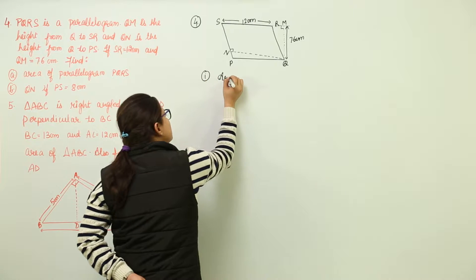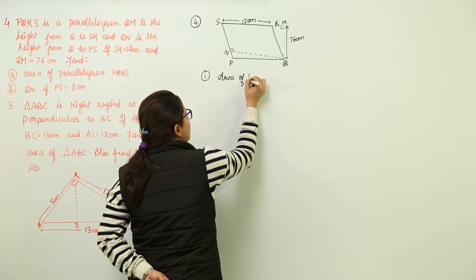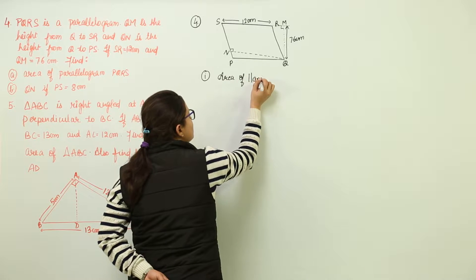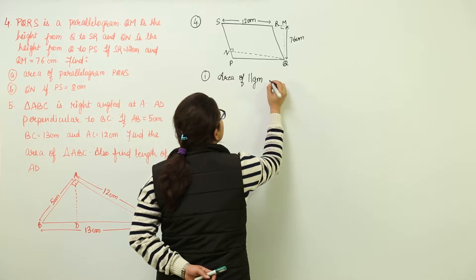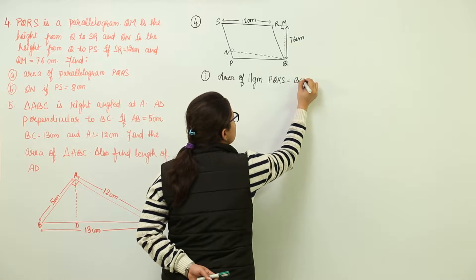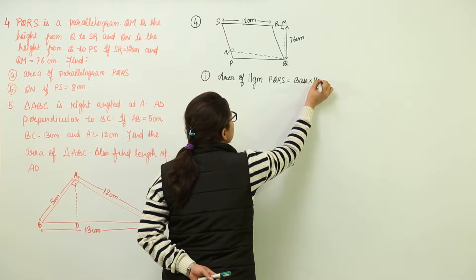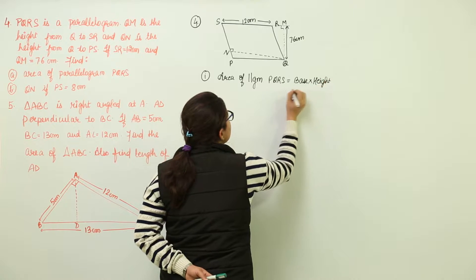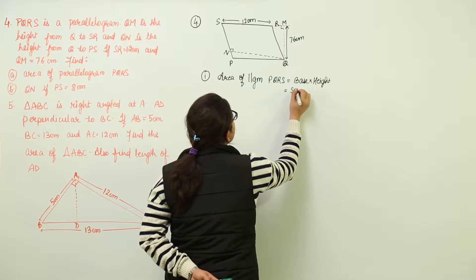So we know area of parallelogram - I am writing this in short form, this represents parallelogram - PQRS equal to base into height. And what is the base? If you take SR as the base,